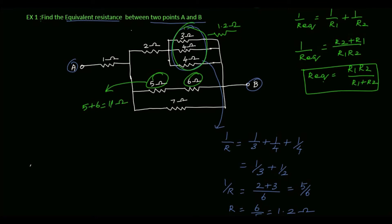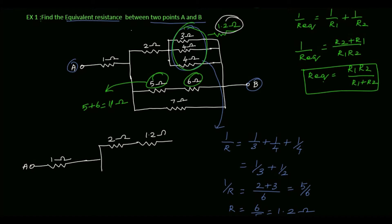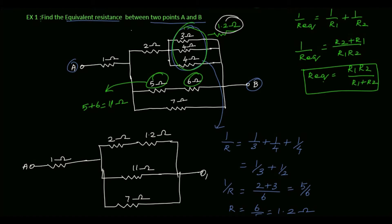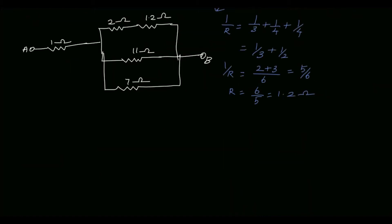Now we will redraw the circuit. This is 1 Ohm as it is. Here we will have 2 Ohm, then we will put the 1.2 Ohm here, then 5 plus 6 that is 11 Ohm, here we have 7 Ohm, and here is terminal B. The 2 Ohm and 1.2 Ohm resistances are connected in series, so the equivalent resistance is 2 plus 1.2, that is 3.2 Ohm.